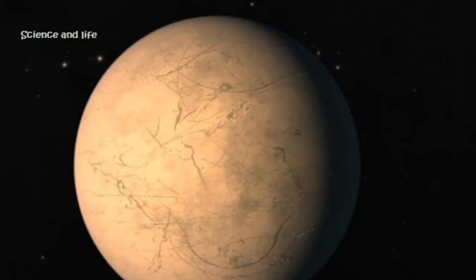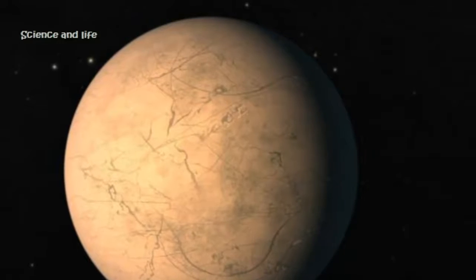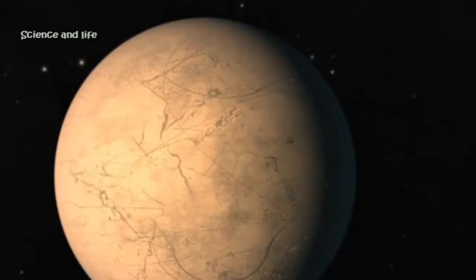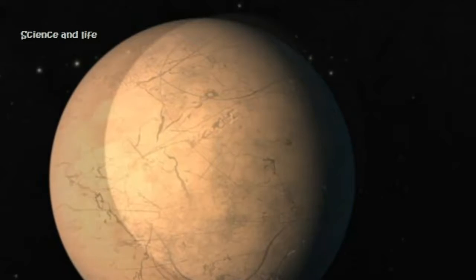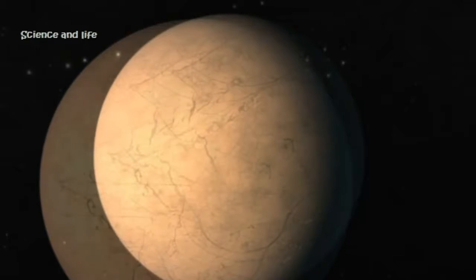There are many factors that contribute to a planet's potential habitability, including proximity to its star. This dictates whether the planet has the right conditions to sustain liquid water. If it's too close or too far, the surface could be dry and barren, or completely frozen.